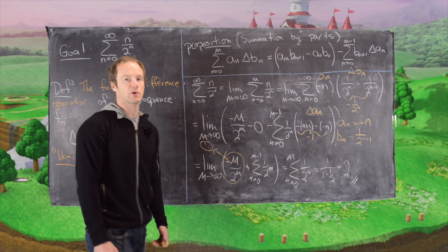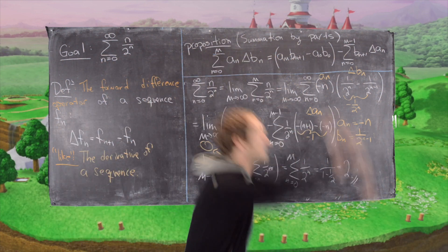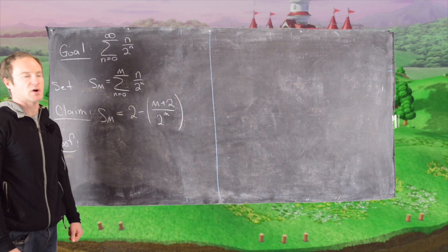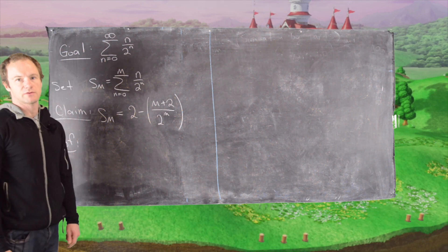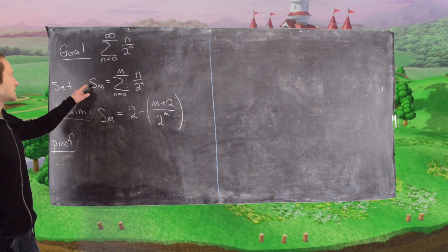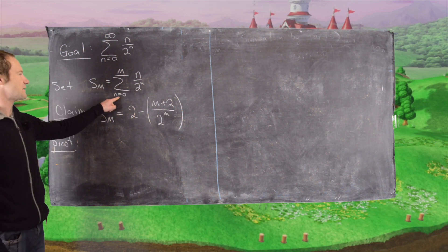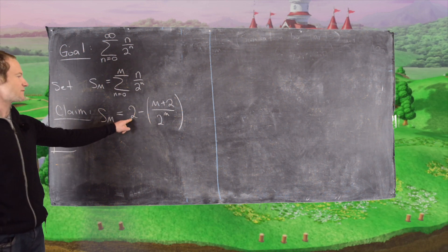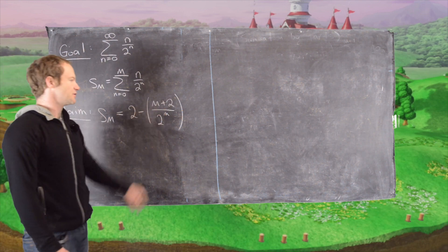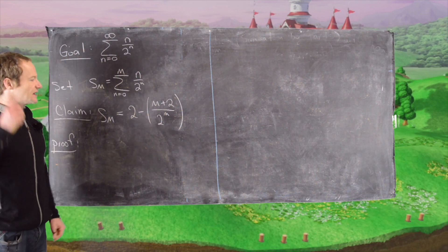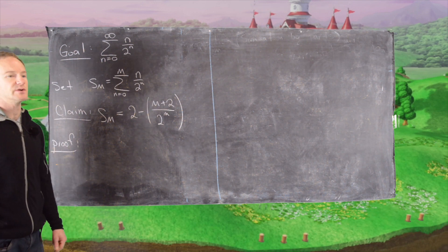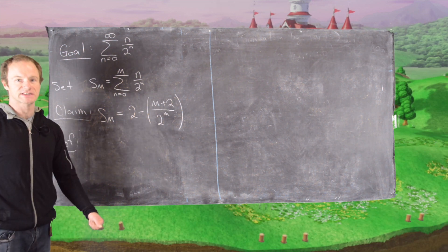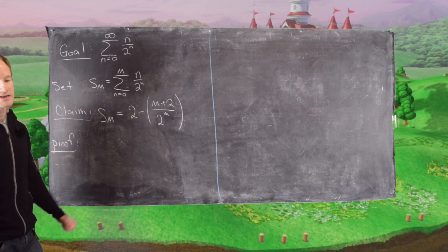Now we're going to look at this sum one more way using the sequence of partial sums. Our goal is again the sum n equals 0 to infinity of n over 2^n. Let the m-th partial sum be the sum n equals 0 to m of n over 2^n. I'll claim this equals 2 minus (m+2) over 2^m. You could derive this formula using the forward difference and summation by parts technique, or guess and check, then prove it by induction — which is what we'll do.